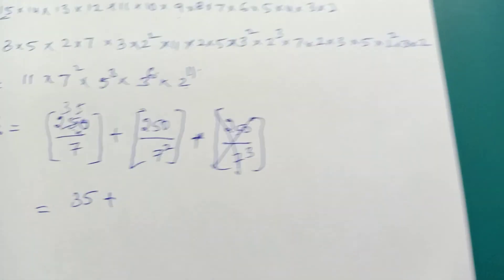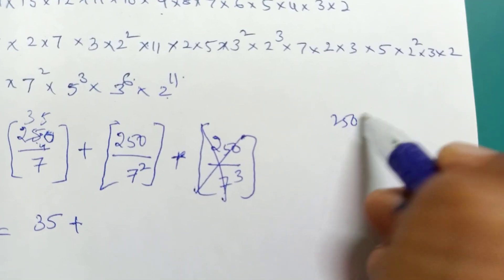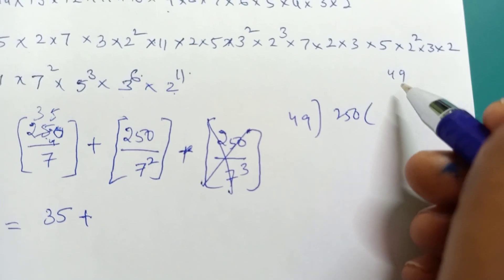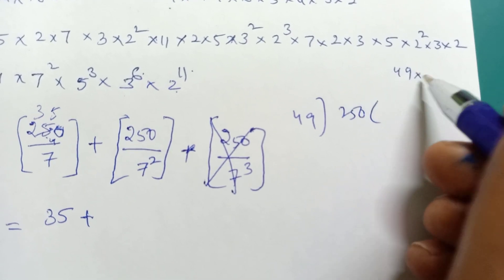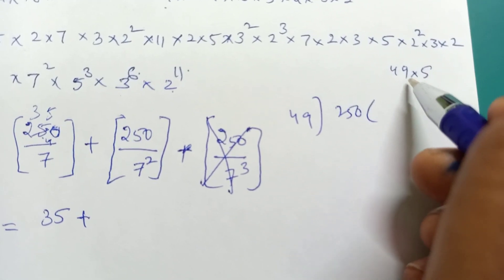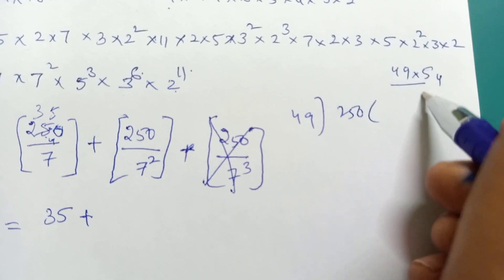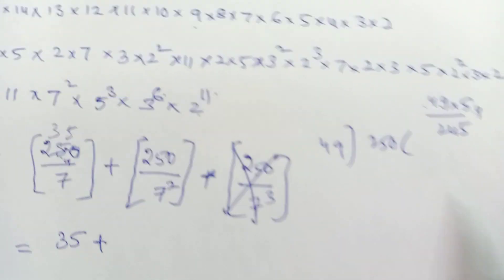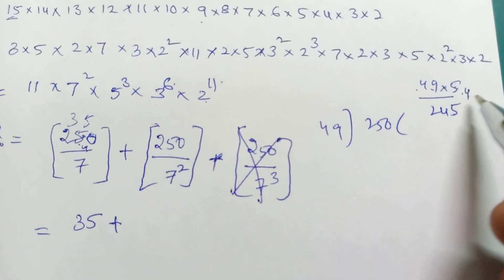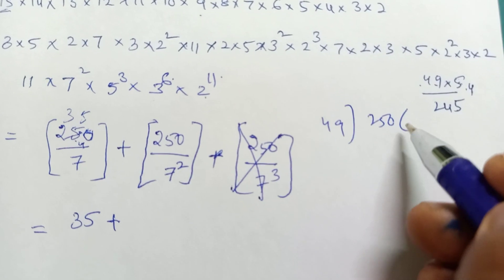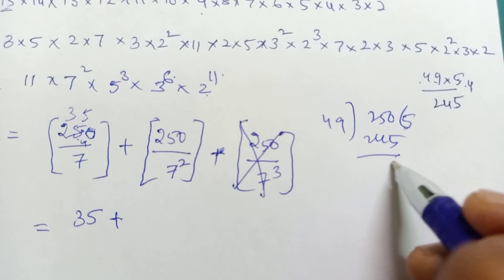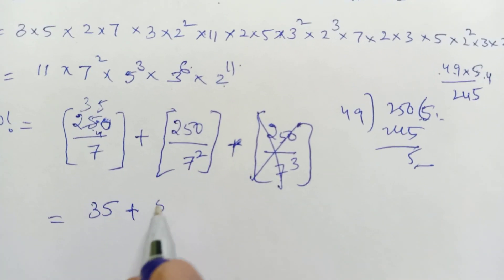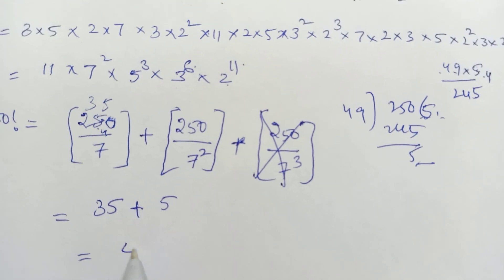Next, 250 divided by 49. 49 goes into 250 five times. 7 times 4 is 28, 6 times 4 is 24. 5 times 9 is 45, 5 times 4 is 20, giving us 24. We get 5 as the integer value.